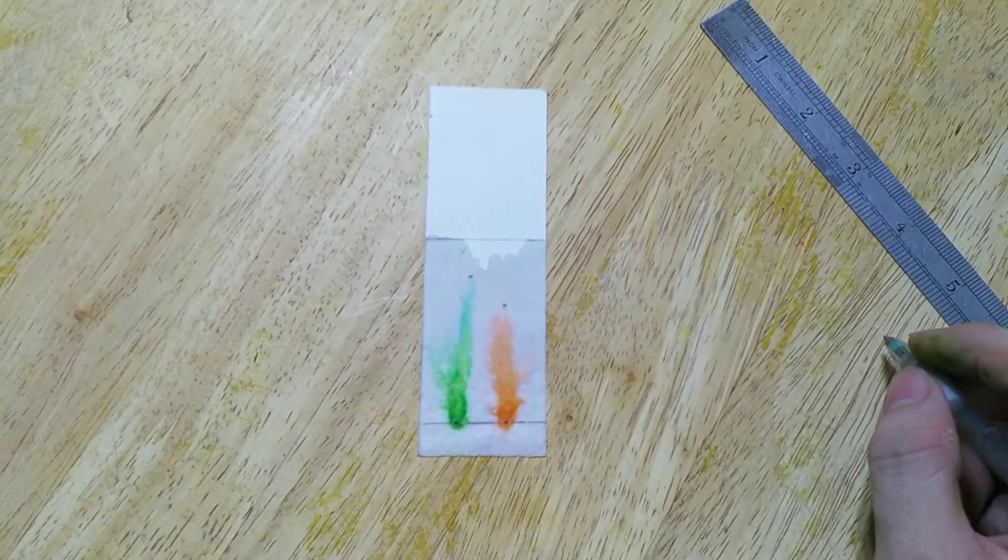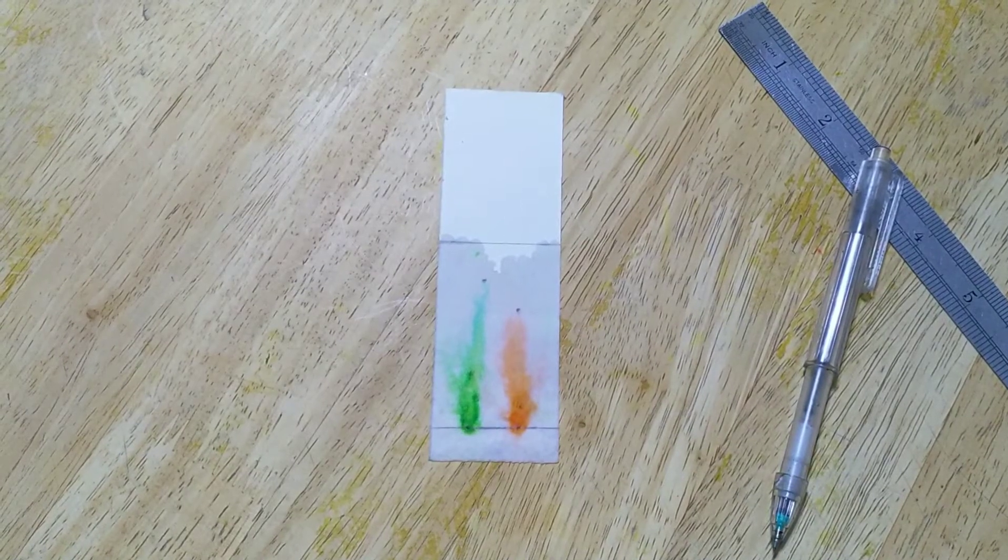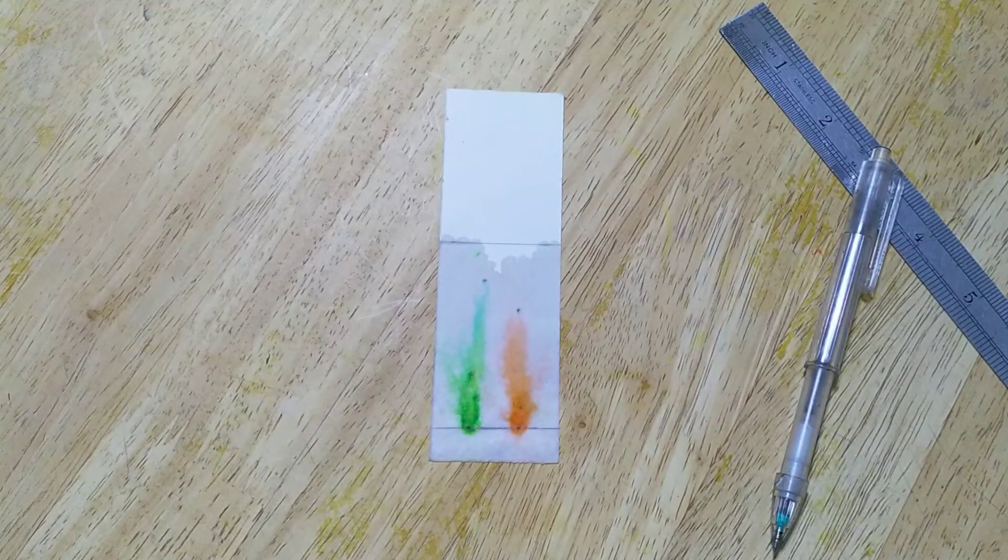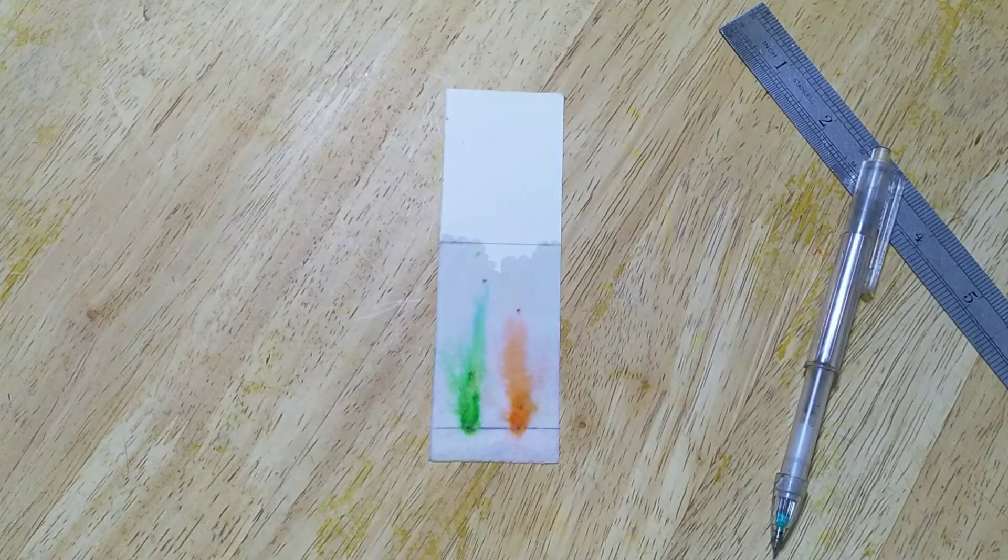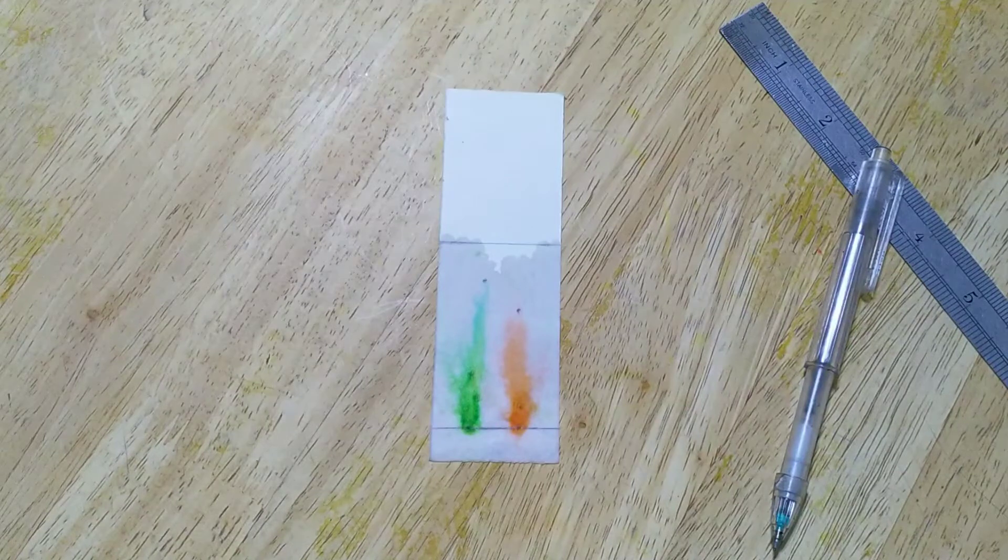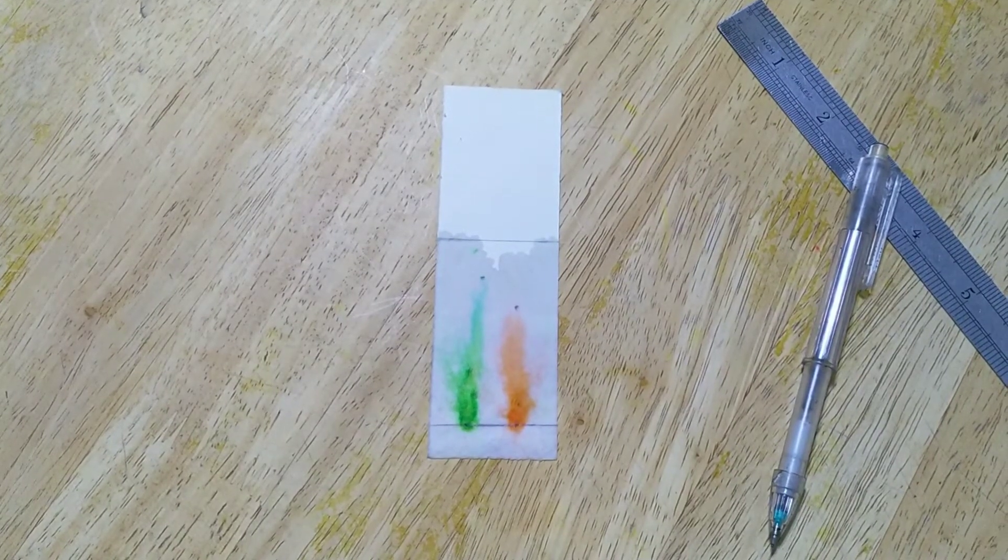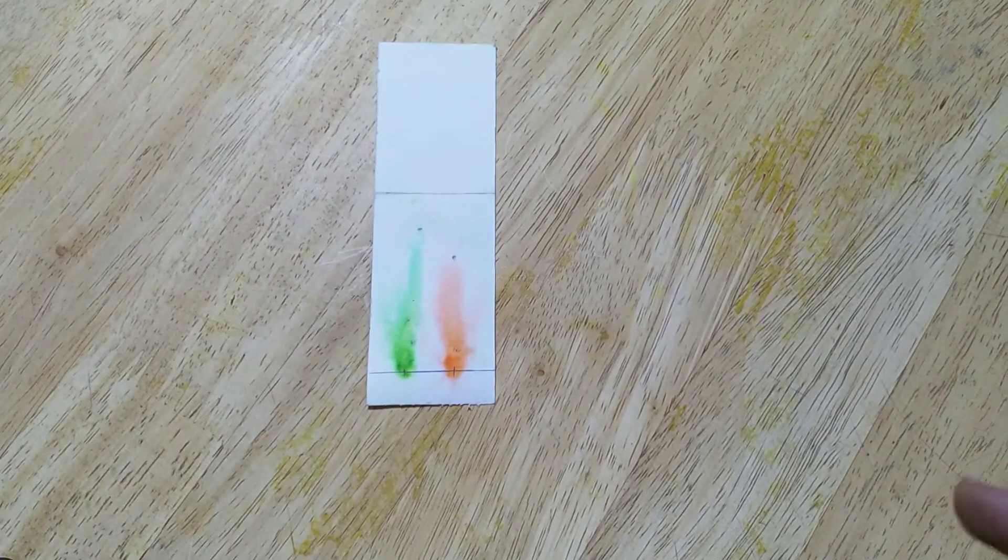Then we let the TLC plate completely dry and then we can measure the range of the color observed and the distance traveled from the origin, then we continue by calculate the RF value. So now we wait for the TLC plate to dry up. After the TLC plate is completely dry, I can see more clearly all the spots.